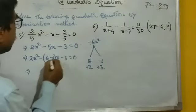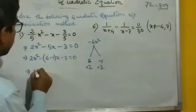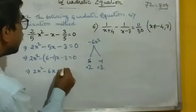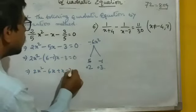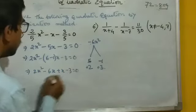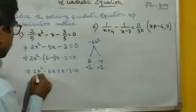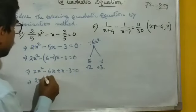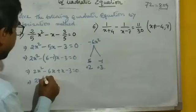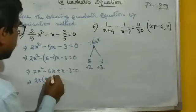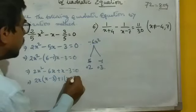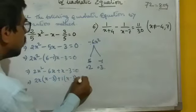So we expand: 2x squared minus 6x plus x minus 3 equal to 0. Taking 2x as common gives 2x times (x minus 3), and taking 1 as common gives 1 times (x minus 3) equal to 0.